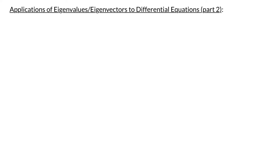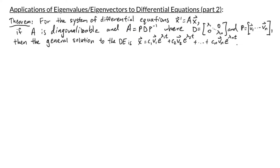In our previous video, we learned how to solve a type of system of differential equations using eigenvalues and eigenvectors. In this video, we'll look at more examples and talk about the different types of solutions. Let me restate what we learned: for the system x prime equals A times x, if A is diagonalizable and A equals PDP inverse, where D is the diagonal matrix with the eigenvalues and P is the matrix containing the eigenvectors, then the general solution is x equals c1 v1 e to the lambda1 t plus c2 v2 e to the lambda2 t, and so forth through cn vn e to the lambda_n t. We use the term general solution if our formula describes all possible solutions to the differential equation.